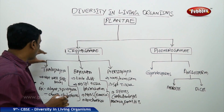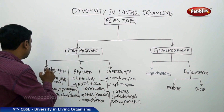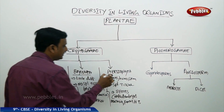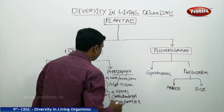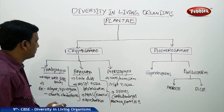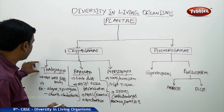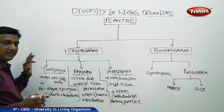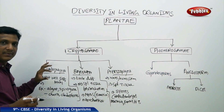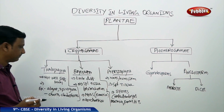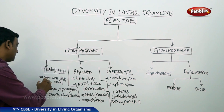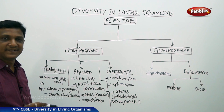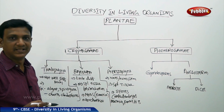Under Cryptogamae, we see three divisions: Thallophyta, Bryophyta, and Pteridophyta. Thallophyta comes under the Plantae but it has a very basic structure — the body is not well defined and differentiation is not done.